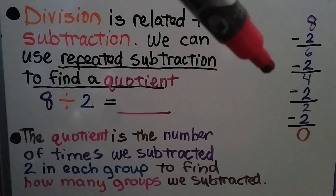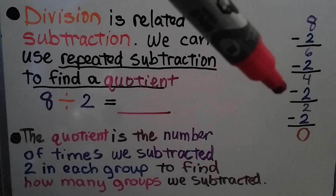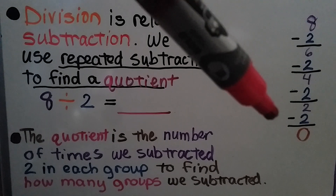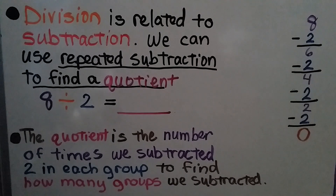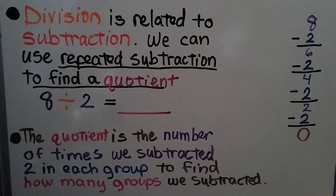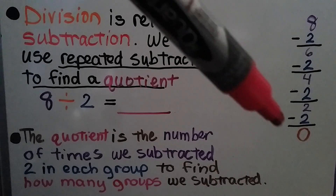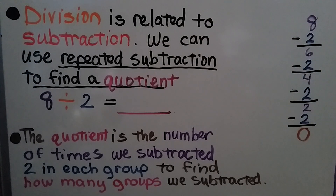We subtract 2 again and get 4. We subtract 2 again and get 2. We subtract 2 again until we get to 0. We count how many times we subtracted 2: 1, 2, 3, 4. We know 8 divided by 2 is equal to 4.